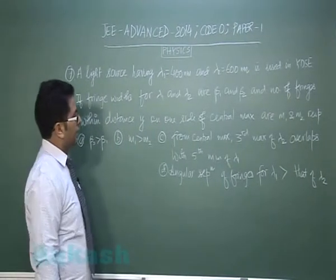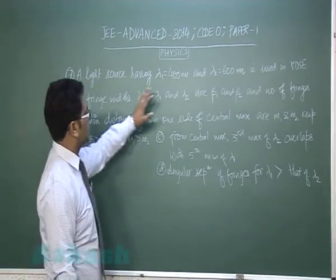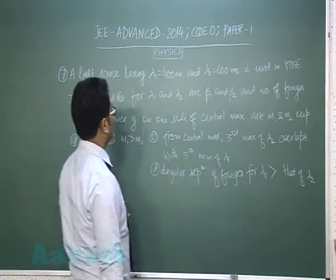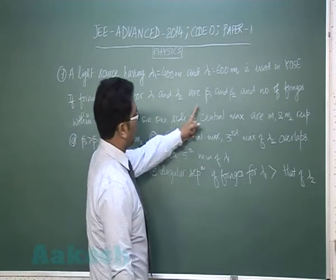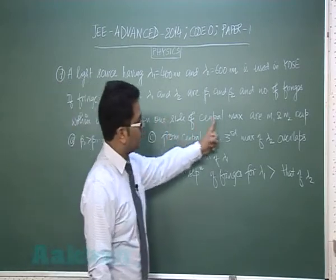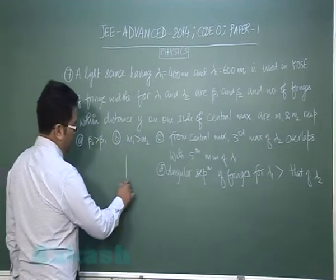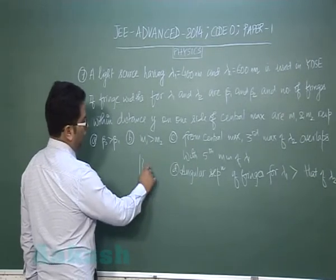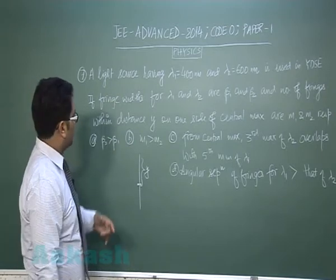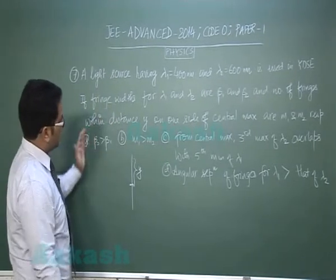Question number 7 is from wave optics, Young's double slit experiment. A light source having wavelengths 400 nanometer and 600 nanometer is used. The fringe widths are beta1 and beta2, and the number of fringes within distance y on one side of the central maxima are m1 and m2 respectively.